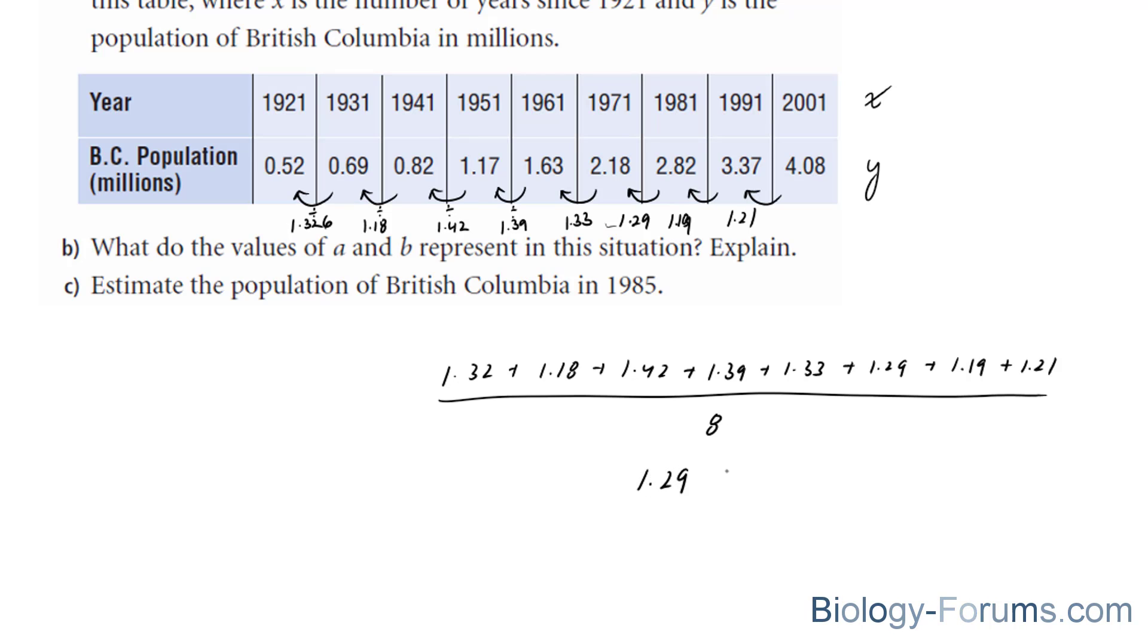And this number right here will represent our base, b. And since it's greater than 1, this suggests that the population has been increasing.